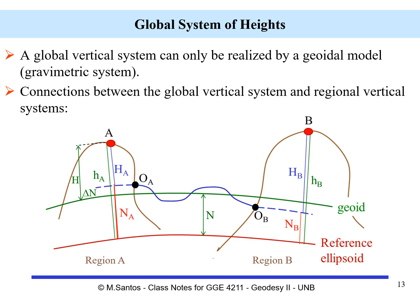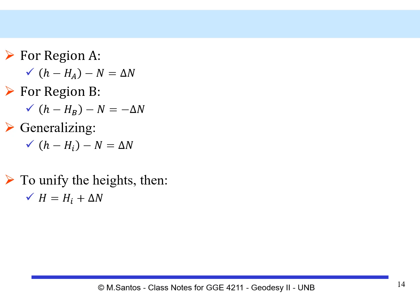How is that accomplished? We look at the geometry and write down a few simple equations. For region A, we can write that the difference between the geodetic height and the orthometric height minus the geoidal height corresponds to delta N, where N without subscript is the N of the global geoid. For region B, we have the geodetic height minus the orthometric height of B minus the global geoidal height equals minus delta N — the negative sign being a consequence of the geometry.